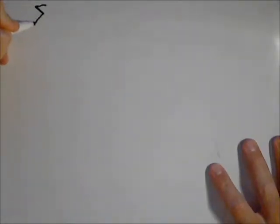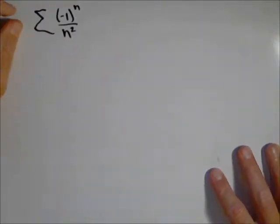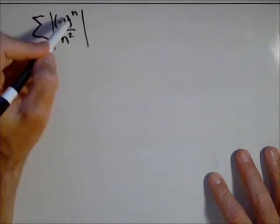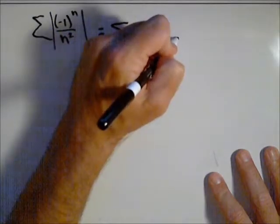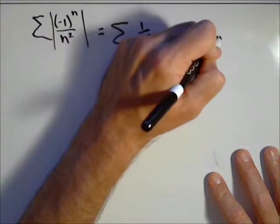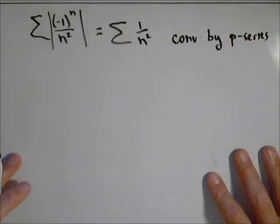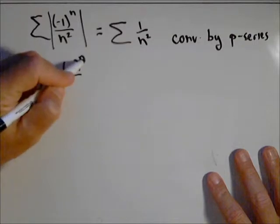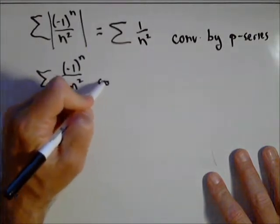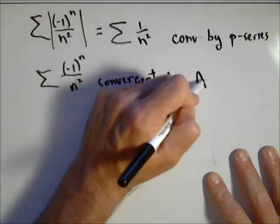I also wanted to look at an alternating series where the absolute value test works. Negative one to the n over n squared is a perfect example, because if we take the absolute value of its terms, we basically get the series one over n squared, which we know is convergent by the p-series test — and we could also show it with an integral test if needed. So negative one to the n over n squared is convergent — in fact absolutely convergent — by the absolute value test.